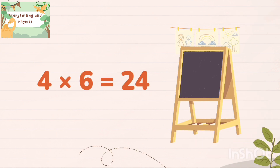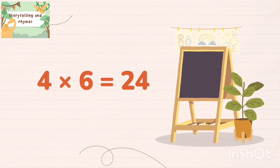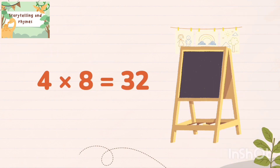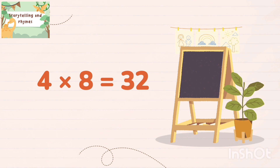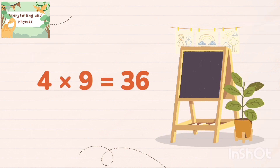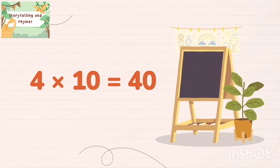4 six's are 24, 4 seven's are 28, 4 eight's are 32, 4 nine's are 36, 4 ten's are 40.